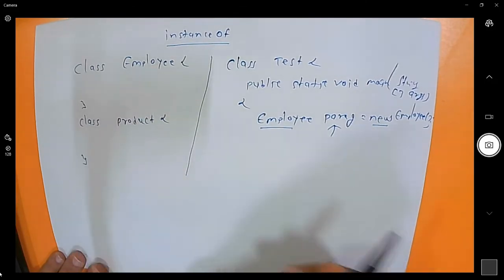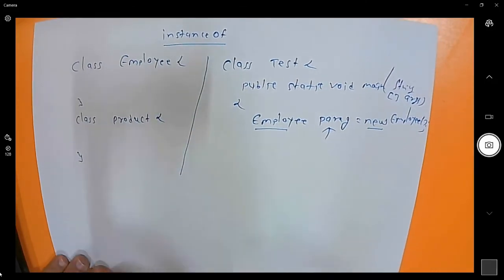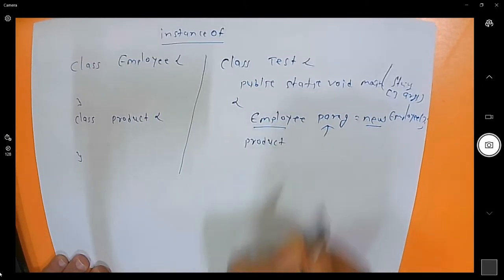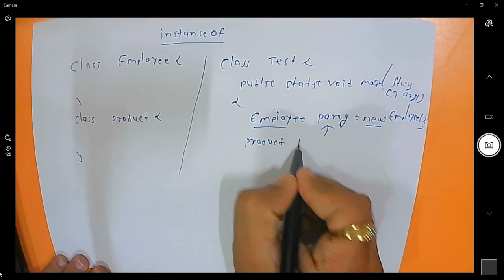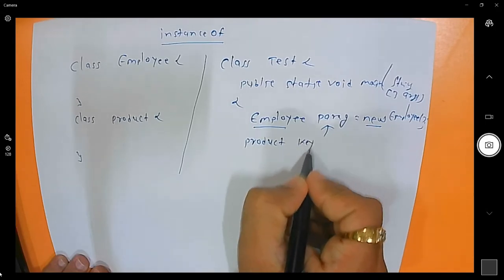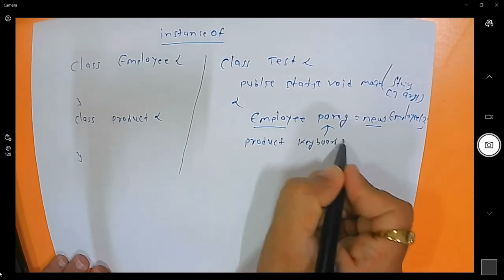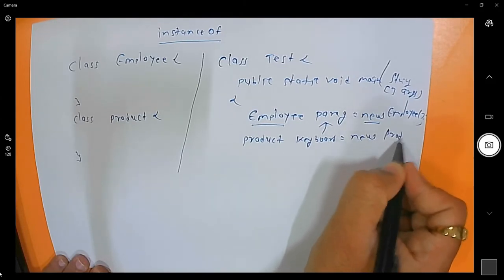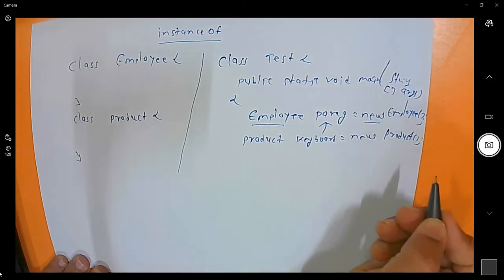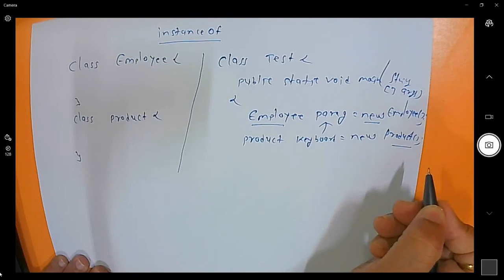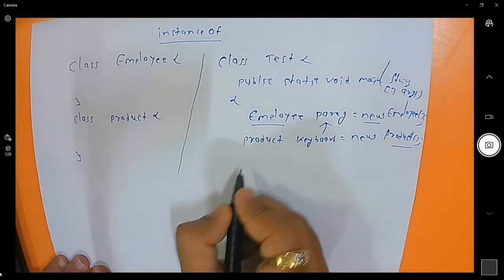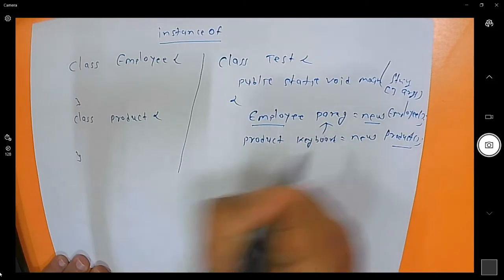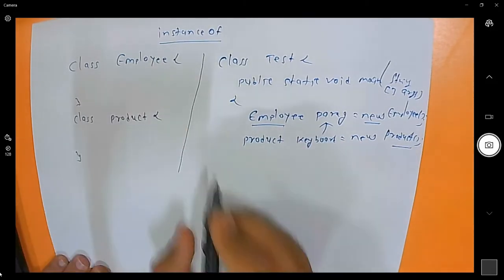Now I am creating one more object — that is Product. Product keyboard = new Product. So keyboard is a new Product. I am creating an instance using the constructor.